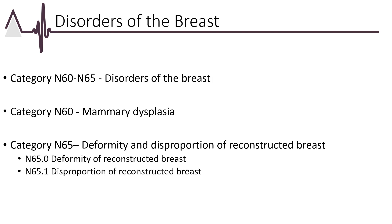Services related to the breast are included in the Integumentary Services codes. The related diagnosis codes are found in Chapter 14. The section of codes is very small but includes diagnoses such as benign mammary dysplasia, inflammatory disorders of the breast, hypertrophy of breasts, unspecified lump in breasts, and other disorders of the breast. Category N64, other disorders of the breast, is where you will find common signs and symptoms of the breast such as pain in the breast and nipple discharge.